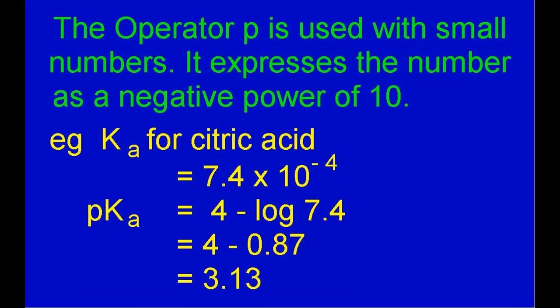For most commonly used acids, the acid ionization constant is quite small. Chemists use the operator P with small numbers. It expresses the number as a negative power of 10. I have chosen as an example citric acid found in oranges. The Ka is as shown. To find the pKa for citric acid, we take the negative power of 10 and subtract log 7.4.